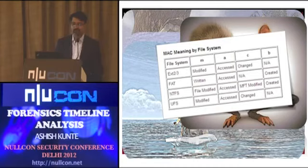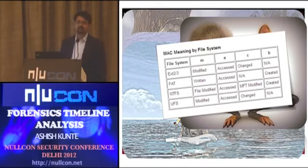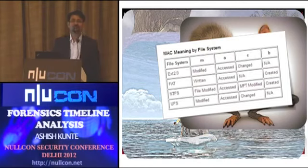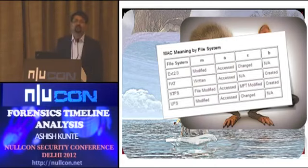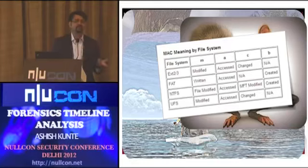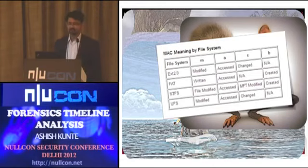The C attribute — change time — is not visible when you look at file properties in a regular computer; it has to be retrieved using forensic tools. There is also a B attribute called birth time. Starting from NTFS file systems onwards, we have a file creation time — FAT does not have it. EXT3 has separate times called deleted times. So M, A, C, B are the four key timestamp attributes to remember.